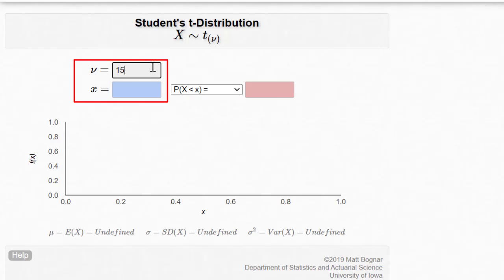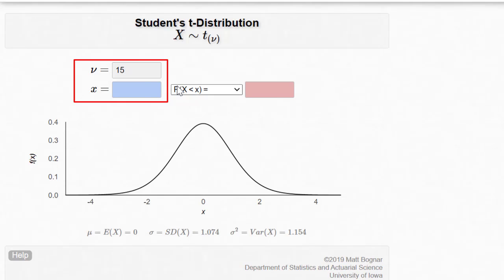Let us input the value of degrees of freedom mu, that is 15 in our example. And now if I insert the value of X which is T critical, for example, I put minus 2.1314 which was the critical value of T distribution for 15 degrees of freedom and 5% alpha risk on both tails. As expected, we see area in the left tail as 0.025 which is half the alpha risk.